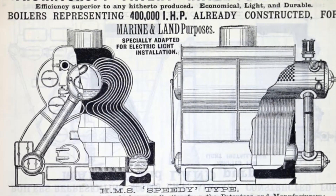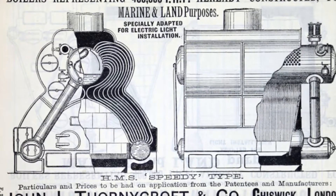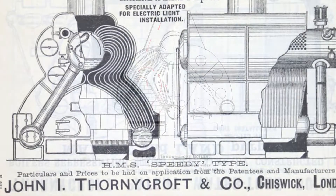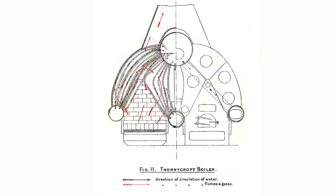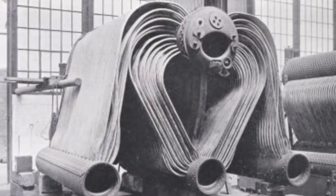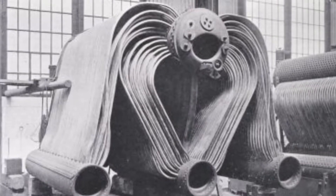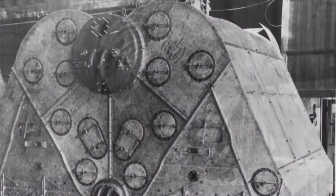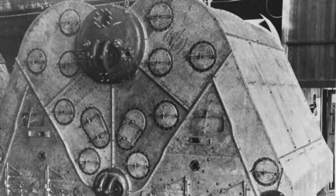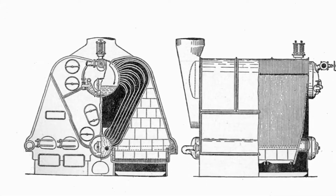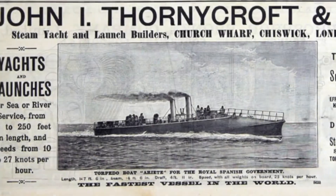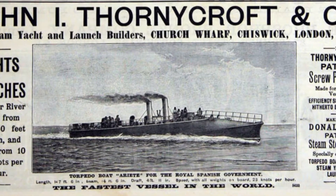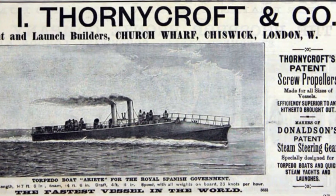Thornycroft Boiler: This boiler was designed by ship manufacturer John I. Thornycroft and Company. Its special design uses just one steam drum on the upper side with three downcomers arranged similar to an M-formation. However, due to several pipes having sharp bends, it carries a risk of leaking quickly — not only from potential thermal stress but also due to difficulties when cleaning. Because of these weaknesses, it was not as popular as the Yarrow boiler.